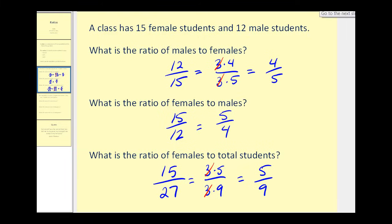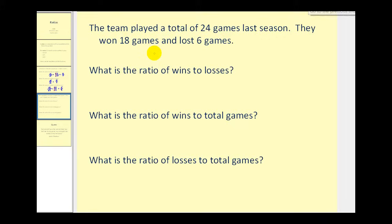Let's go ahead and take a look at another example. The team played a total of 24 games last season. They won 18 games and lost 6 games. What is the ratio of wins to losses? Well if they won 18 games and lost 6 games, the ratio would be 18 to 6.